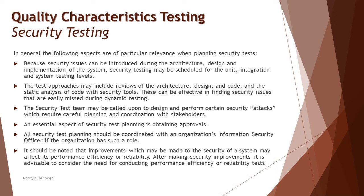It should be noted that changes made to improve security of the system may affect its performance efficiency or reliability. Any change to fulfill one quality attribute can affect other quality attributes — usability, reliability, and performance are all related to architecture, including security. For instance, once you fix a security issue and modify the architecture, performance which was previously good may be impacted. You may need to re-run performance testing scenarios to confirm that performance has not been affected after these changes.